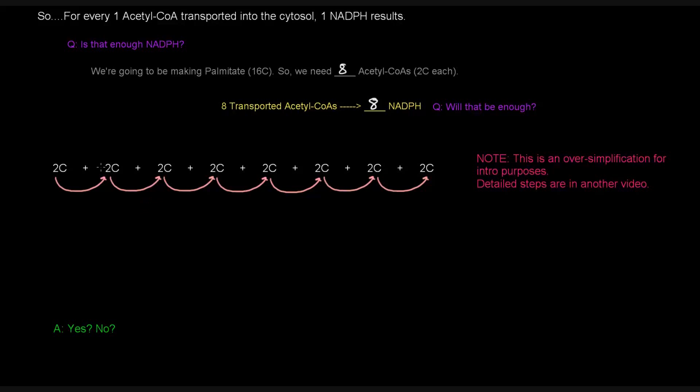So, let's see here. By the way, this whole thing that I'm talking about right now, this is totally an oversimplification, and it's really just for the introduction. The detailed steps of this process are in another video. Okay? So, just before anyone gets mad at me. Okay. So, we've got, we're going to basically link eight of these acetyl-CoAs. So, this is one, two, three, four, five, six, seven, eight acetyl-CoAs, eight two-carbon units, and we're going to link them together.